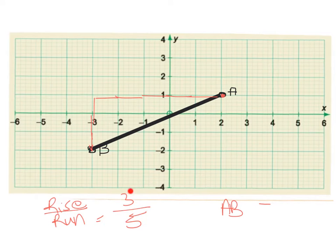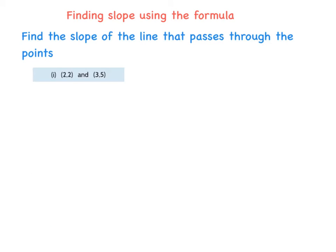So the slope of this line is 3/5. But we can actually use another method to find the slope of a line, and it's through using a formula, very similar to the distance formula and the midpoint.